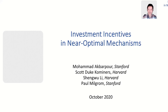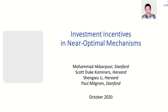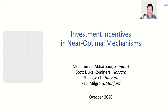Thank you so much. It's such an honor to be here, and I'm so glad to get to talk to all of you. I'm also glad that Nima had the time to come and be a discussant for this. This is joint work with Mohammed, Scott, and Paul. We are none of us computer scientists, but this is our attempt as economists to take some computational issues seriously and think about their implications for mechanism design. As the title suggests, we're thinking about investment incentives in mechanisms where the underlying allocation rule is not exactly optimal — where, for some computational reason, we're not able to exactly compute the optimum.